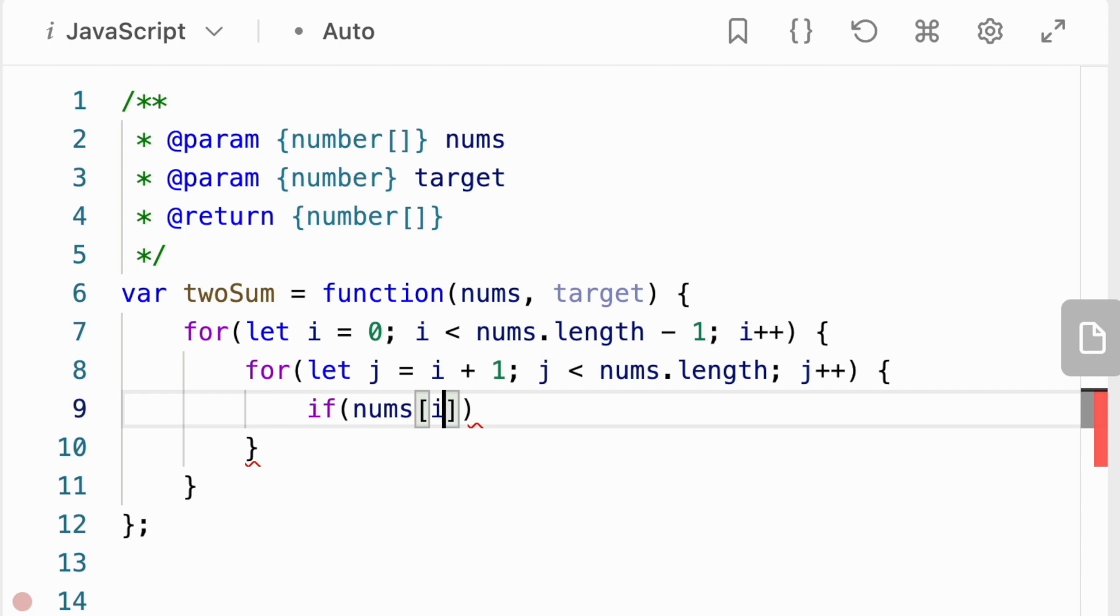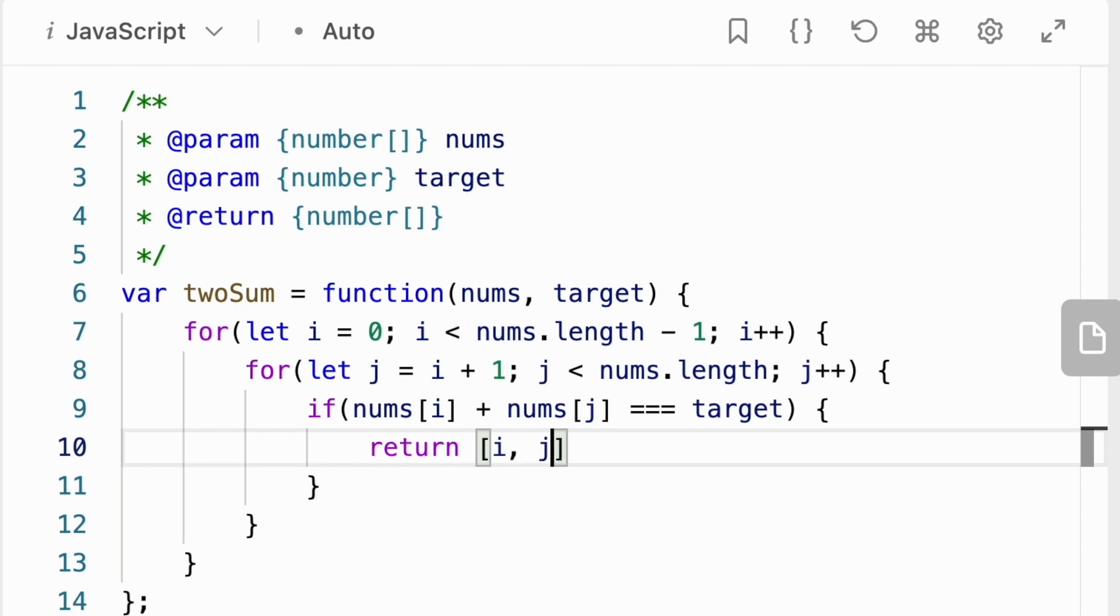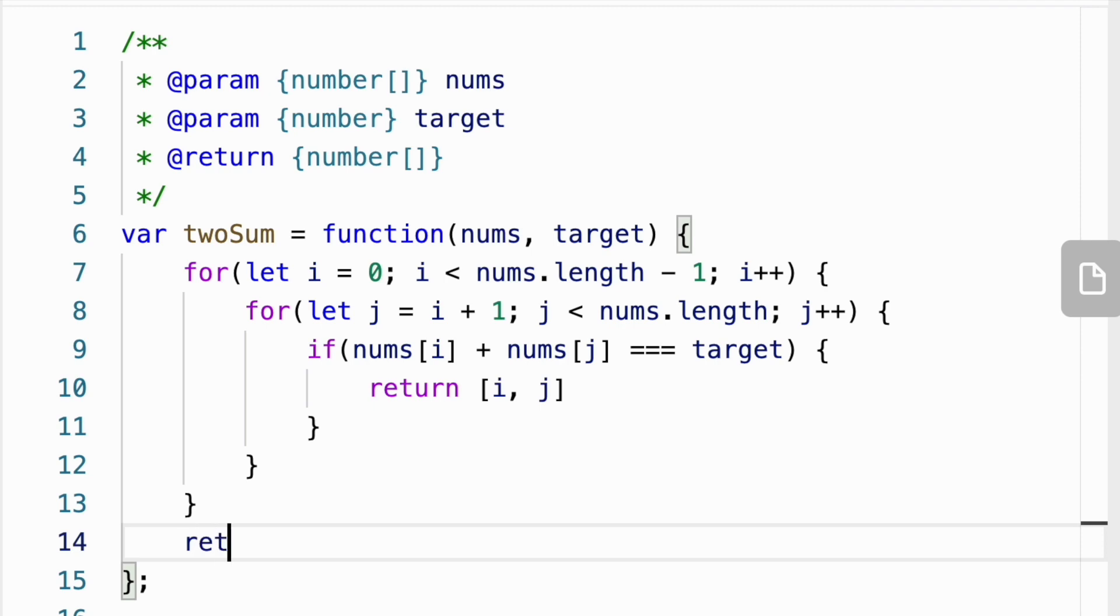We compare the sum of 2 elements to the target value. And if they match, we return the indices of those elements. And if no solution is found, we simply return an empty array.